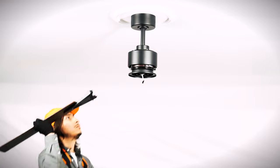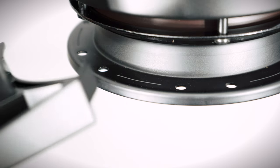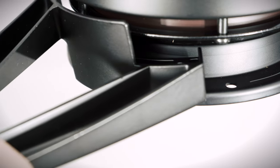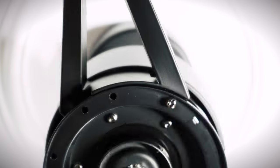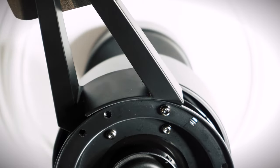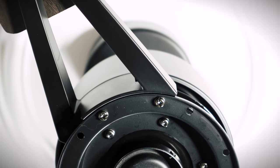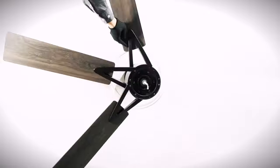Bring the blade assembly up to the fan and align it over the bottom motor plate using the engraved line as a guide. Insert and securely tighten two blade arm screws underneath. Repeat the process for the remaining blades.